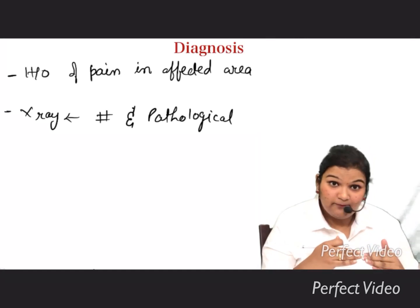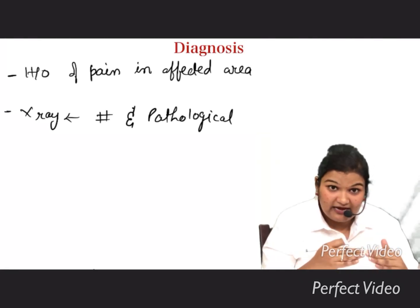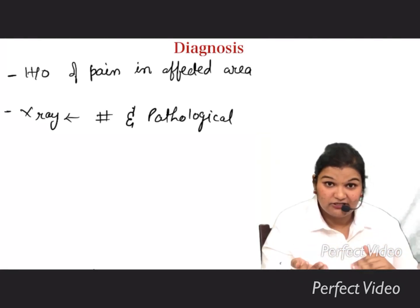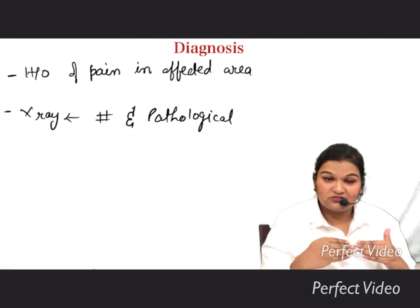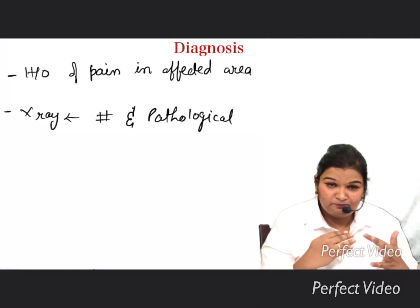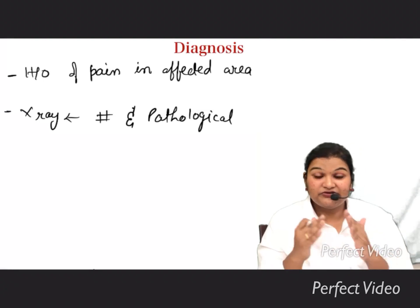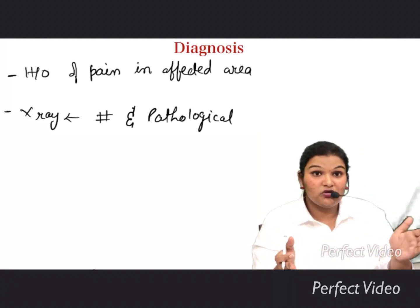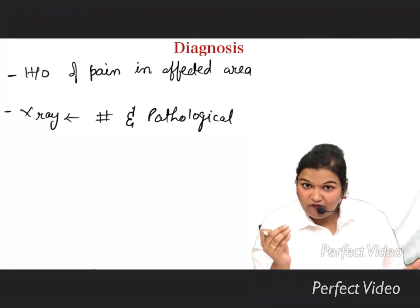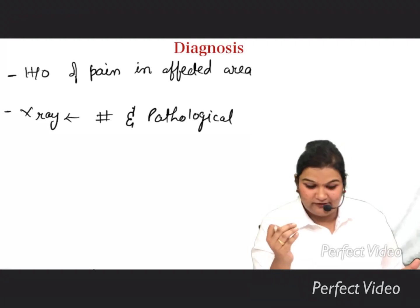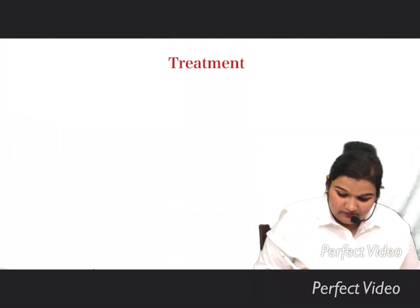Pathological fractures are preventable. You can provide prophylactic care to prevent the fracture if you diagnose the underlying pathology beforehand. If a person is suffering from severe osteoporosis, Paget's disease, or any other pathology, treat that pathology first, and the fracture will not happen. So pathological fractures are preventable if you search for the pathology beforehand and treat it.